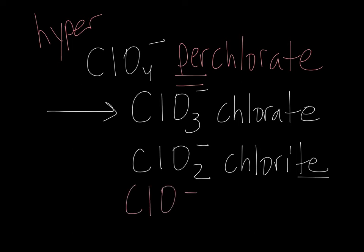What if we have one less oxygen even than chlorite? Hypochlorite is the name of this ion. Hypo means less than or under. A hypodermic needle goes under your skin. A hyperactive puppy is very active.